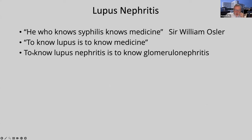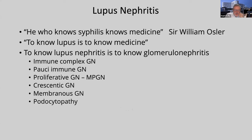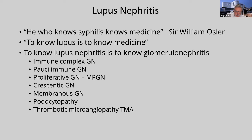I would say to know lupus nephritis is to know all of glomerular nephritis. Look at all the lesions associated with lupus nephritis: there's immune complex GN, pauci-immune GN, proliferative GN with an MPGN picture, crescentic GN — with overlap among all of these. These are clinical and pathologic patterns of injury, but you'll see them all in lupus nephritis: membranous, podocytopathy, and even TMA associated with lupus anticoagulant antibodies.